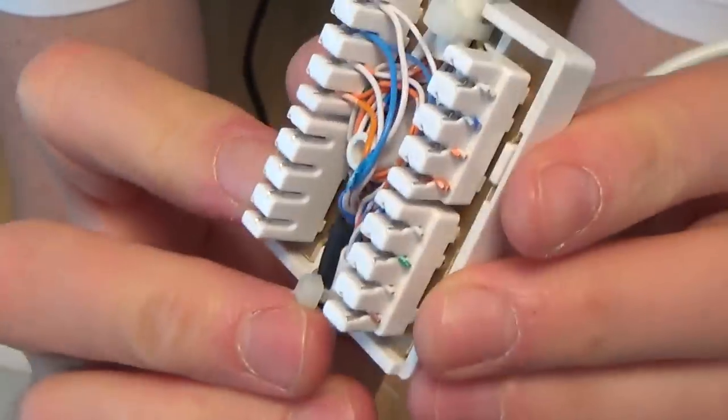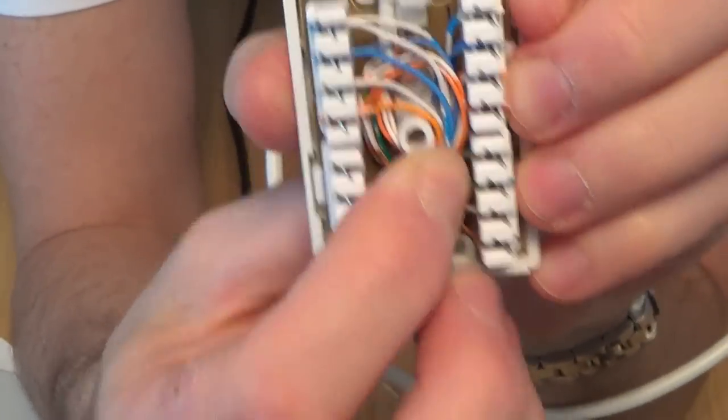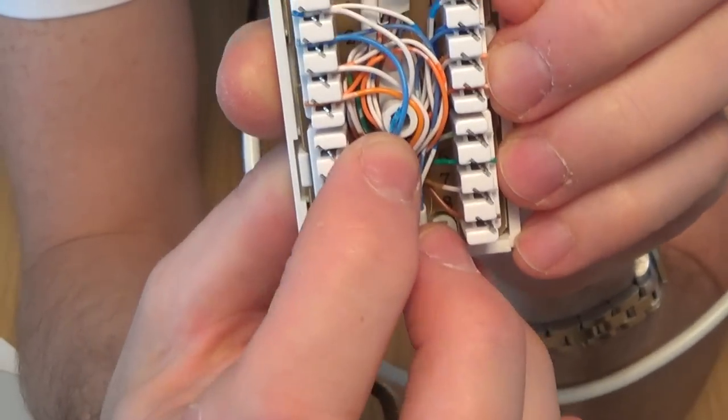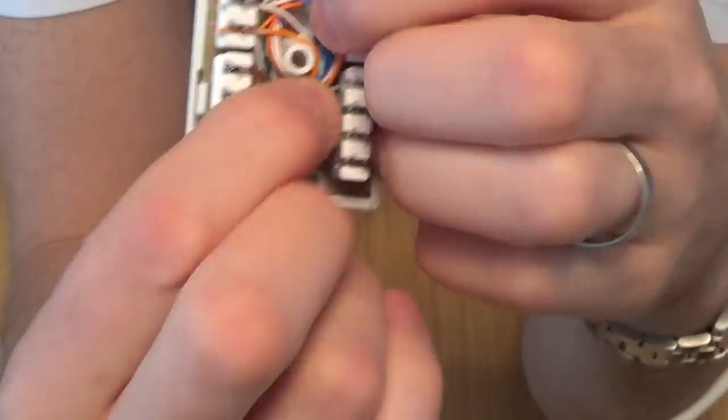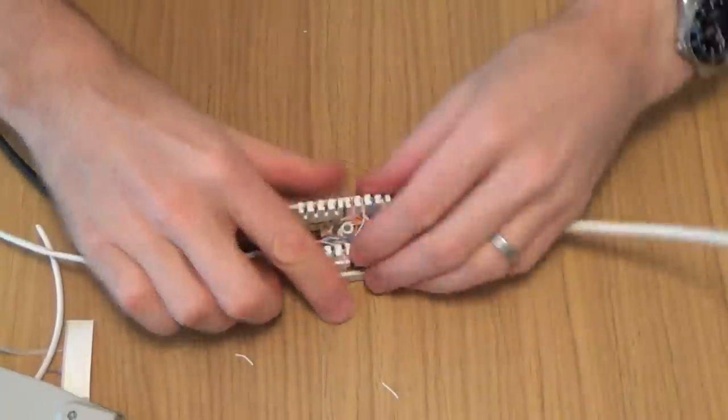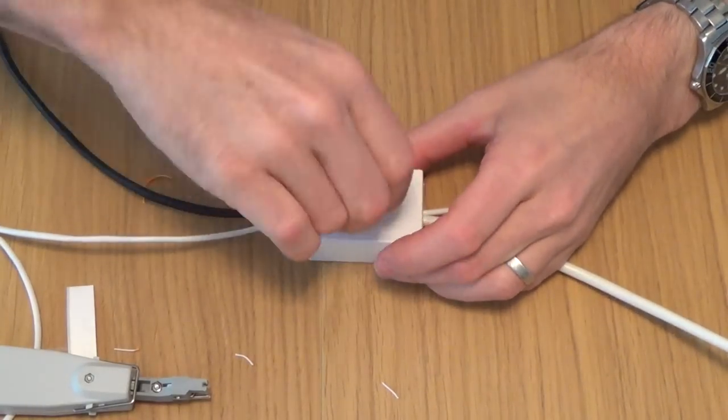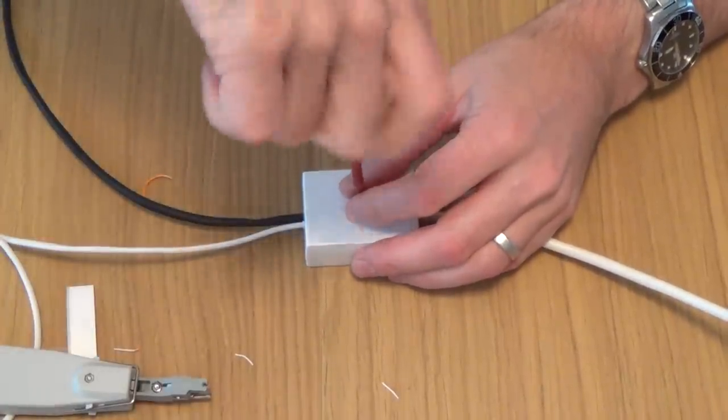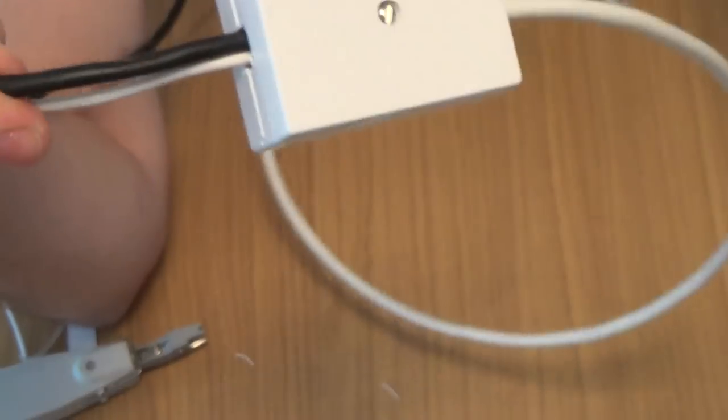You can see that when we put the lid on, that these wires are away from this hole here, because if you had the wires going over like that and you went to screw the lid on, what's going to happen is they're going to short out and then you're going to get a problem. Then you're going to be pulling your hair out trying to work out where the short is. So push the wires well away from that, and then you've just got to put your lid on. Like so. That's how you do the junction box.